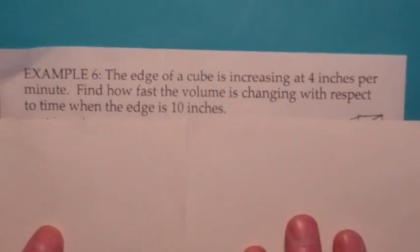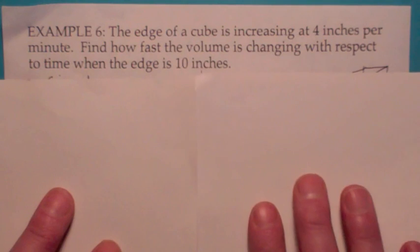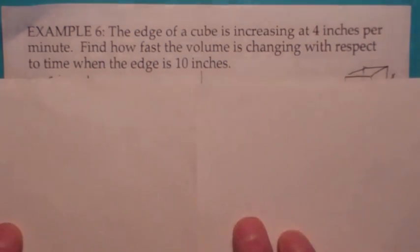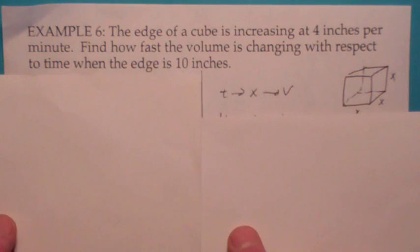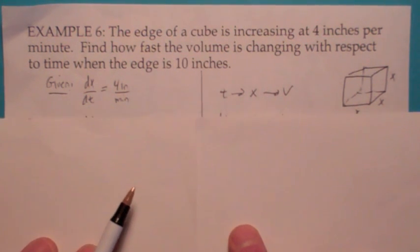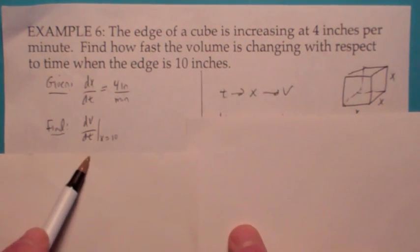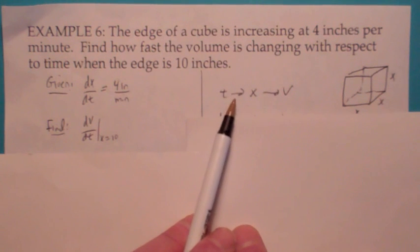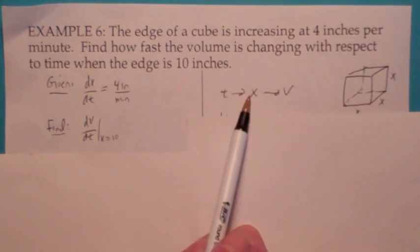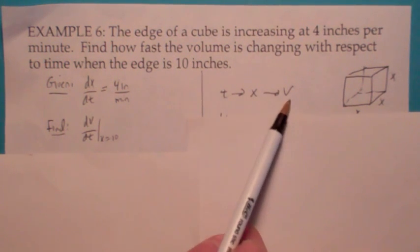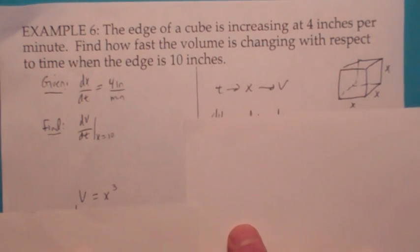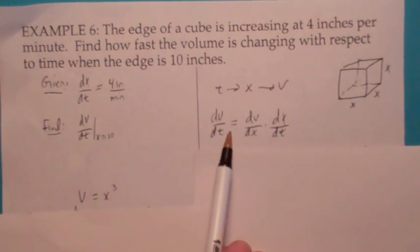This problem is similar to the last one. Suppose the edge of a cube is increasing at 4 inches per minute — that's a derivative. If x is the edge of a cube, then dx/dt is 4 inches per minute. The question is how fast is the volume changing when the edge is 10 inches? So they want dV/dt when x equals 10. The key is to figure out what's a function of what. Since they give you dx/dt, it makes sense to think of x as a function of time. The volume of a cube is a function of the edge length — v equals x cubed. So when you use the chain rule, dV/dt equals dV/dx times dx/dt.